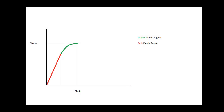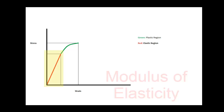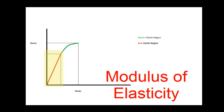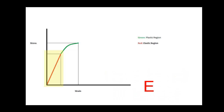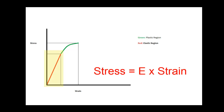On the stress-strain diagram, the region corresponding to elastic deformation is linear. The slope of this line is known as the modulus of elasticity. This provides the equation: stress equals modulus of elasticity times strain.